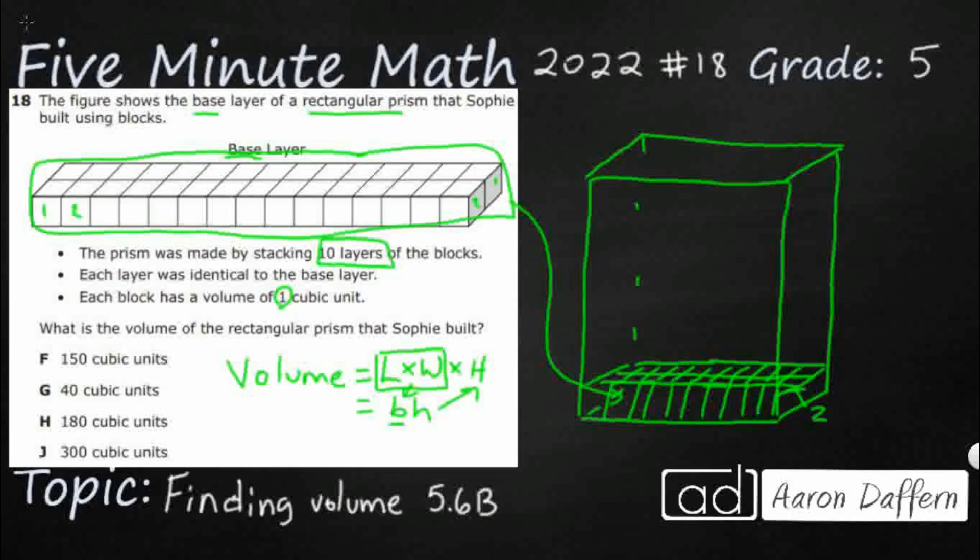And we've got the width. Oh, look at this. 1, 2, 3, 4, 5, 6, 7, 8, 9, 10, 11, 12, 13, 14, 15. So it's 15 across, two back.